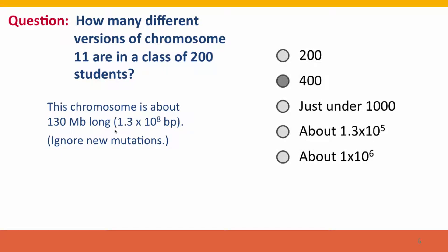And the answer is, you didn't need to know how long the chromosome was at all. There's only 200 people in the class. There can only be 400 total versions of the chromosome. It's unlikely that any of them are going to be identical because the chromosome is so big. Every one of them is almost certainly going to be different. So 400 is the right answer.